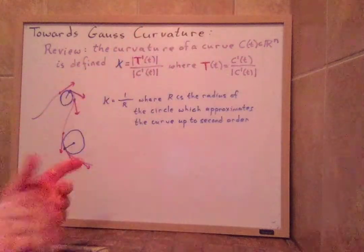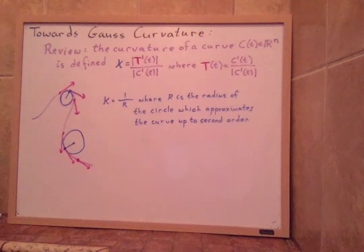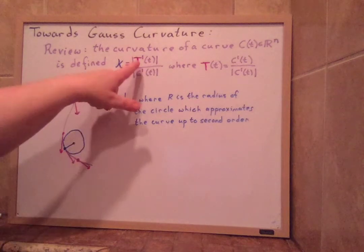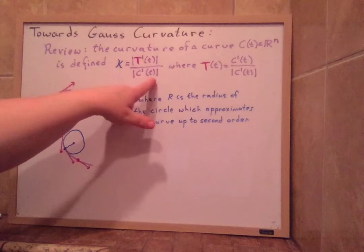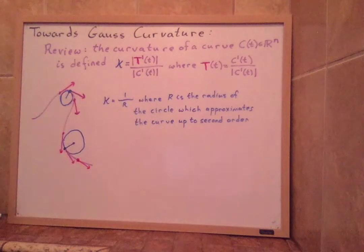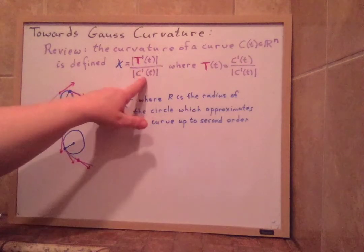So remember, we have a curve running through R^n, and we had defined the curvature of a curve. It was defined to be the change in the tangent vector's direction divided by the length, or the velocity, the speed of the curve.